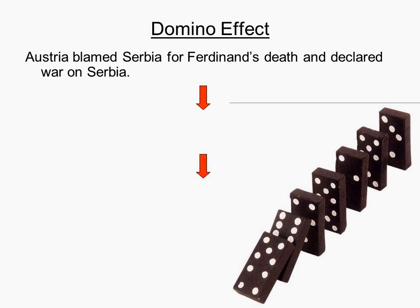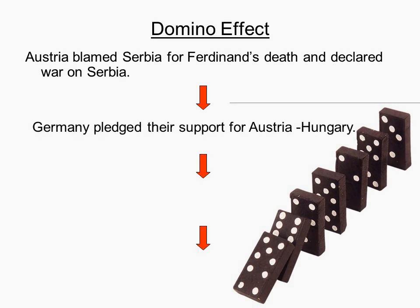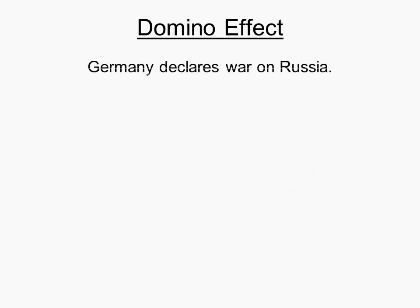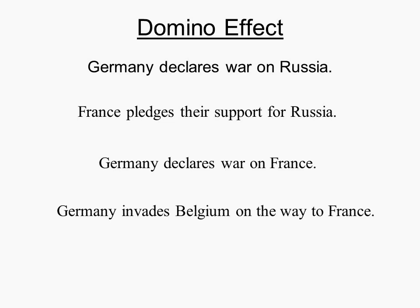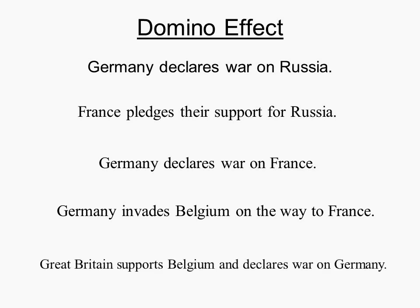Austria blamed Serbia for the death of Ferdinand and declared war on Serbia. Germany supported Austria while Russia supported Serbia. Germany then declared war on France and Russia, and then the war started.